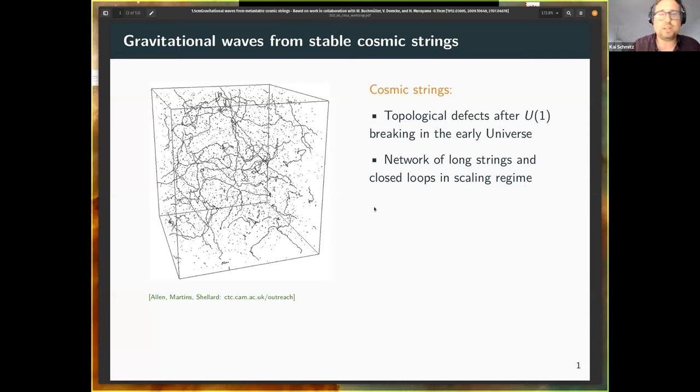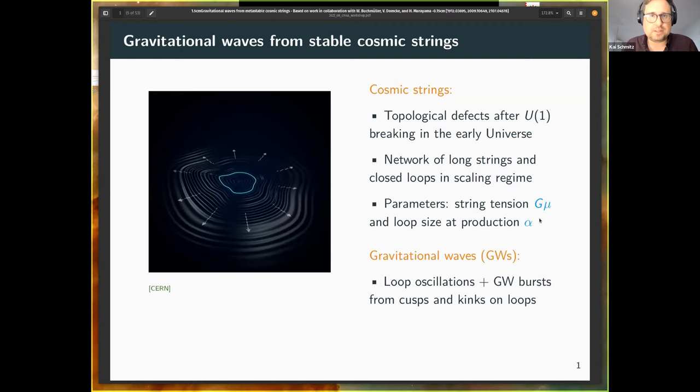After the formation of cosmic strings, these cosmic strings organize themselves in a network. Here you see the outcome, a snapshot of a numerical simulation of such a cosmic string network. That consists of long strings that you can see here, and those stretch across many Hubble horizons. Practically, they are infinitely long. But then, these long strings can also intersect with themselves or with each other. These so-called intercommutation events then lead to the production of closed string loops. These are these little dots here in the simulation. Closed loops chopped off from the long string network in the course of the evolution.